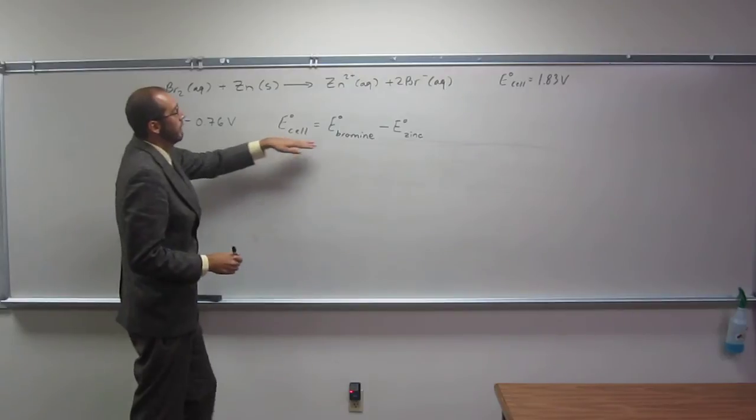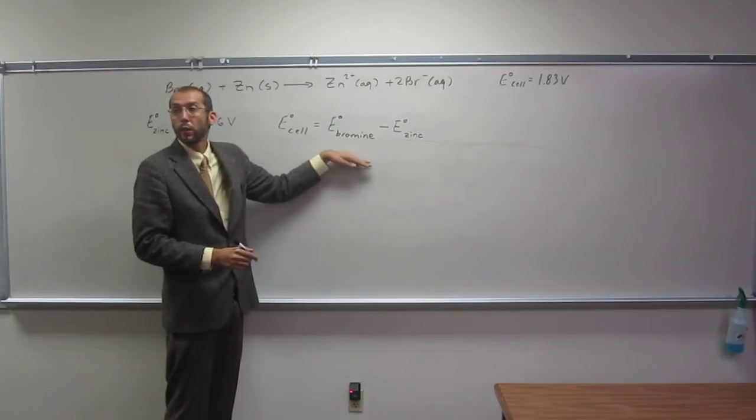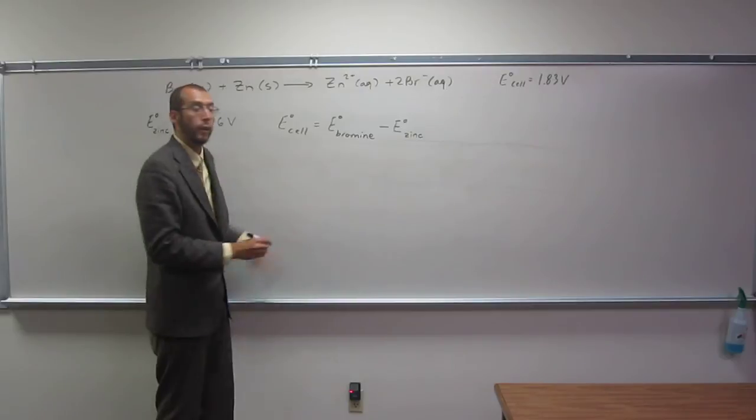So we know E cell, we know E zinc, but we don't know E bromine, that's what we're looking for. So let's rearrange this to find it.